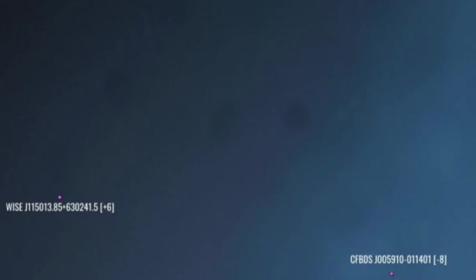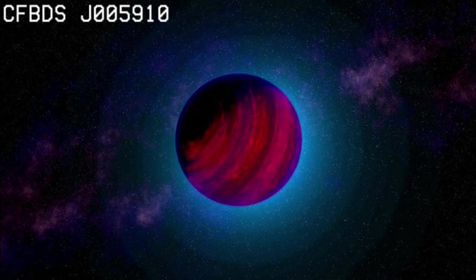Moving back toward the second ring, we find these two brown dwarfs. The first, J115013, is a T-class brown dwarf about which I can learn nothing. The other, CFBDSJ005910, is a young, less than 5 million years, cold, about 625K, smallish brown dwarf of about 20 Jupiter masses.